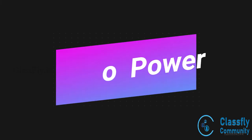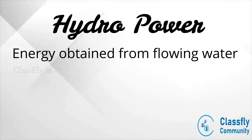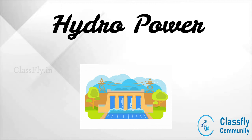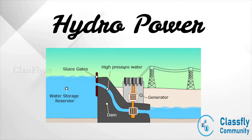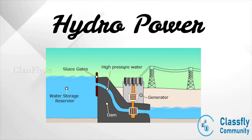Next, we move on to hydropower — the energy obtained from flowing water. The energy stored in the flowing water is converted into electricity by means of a turbine. A dam is built to collect and store a large amount of water. The potential energy stored in this water is converted into kinetic energy when the water flows through a converging and diverging path known as a nozzle. This kinetic energy causes the blades of the turbine to rotate, driving the generator and producing electricity.